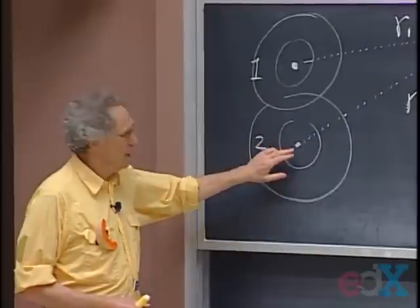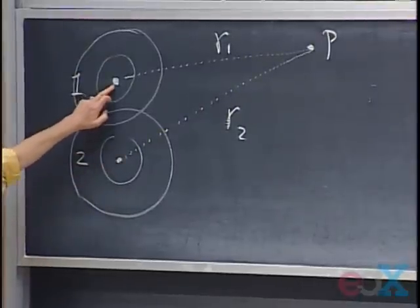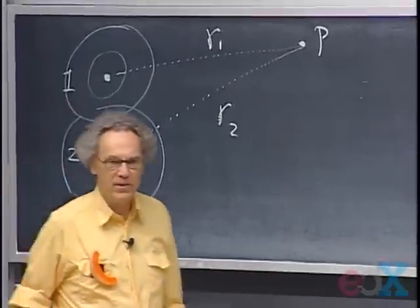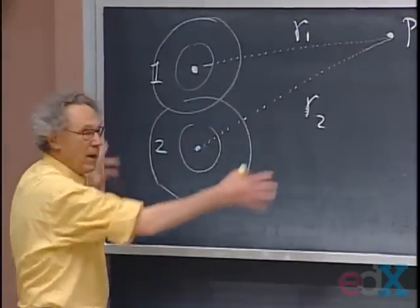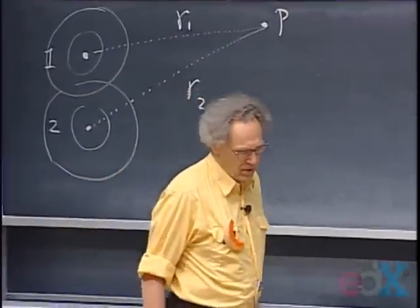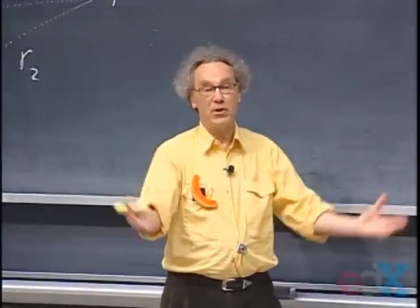It is also possible that the waves arriving at point P are exactly 180 degrees out of phase, so the mountain from two arrives at the same time as the valley from one, and they can kill each other. We call that destructive interference. You can have this with water waves on a two-dimensional surface, with sound in three dimensions where waves go out on a sphere, and with electromagnetic radiation, which is also three-dimensional.